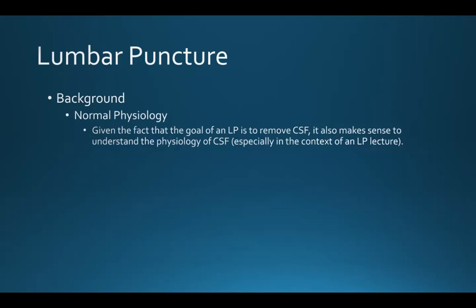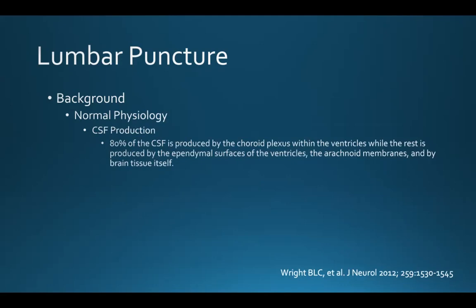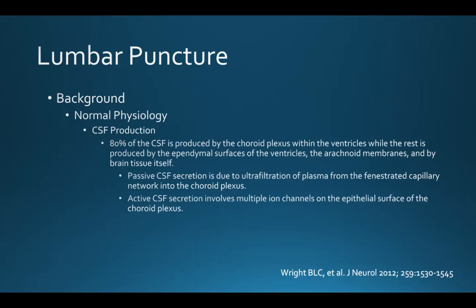Given that the goal of an LP is to remove CSF, it makes sense to understand CSF physiology. Eighty percent of CSF is produced by the choroid plexus within the ventricles, while the rest is produced by the ependymal surface of the ventricles, the arachnoid membranes, and brain tissue itself. CSF secretion is both passive and active. Passive secretion is due to ultrafiltration of plasma from the fenestrated capillary network, while active secretion involves multiple ion channels on the epithelial surface of the choroid plexus.